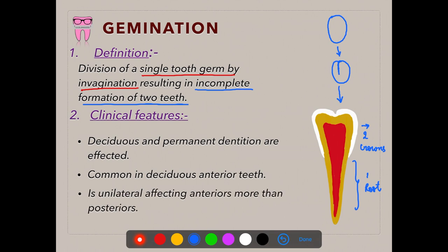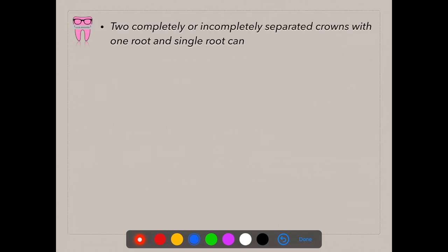Coming to the clinical features: both deciduous and permanent dentitions are affected, but this is more common in deciduous teeth. Among anteriors and posteriors, anteriors are mostly affected. You would see two completely or incompletely separated crowns with one root and a single root canal. In germination, you will never find two roots — if there are two roots, it is not germination.